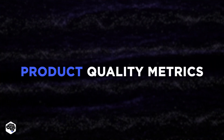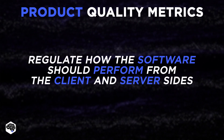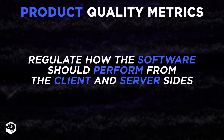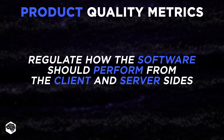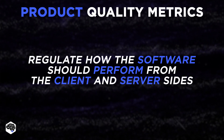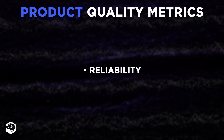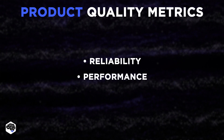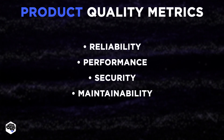The first group is product quality metrics. They regulate how the software should perform, both from the client and server sides. This group includes such components as reliability, performance, security, and maintainability.